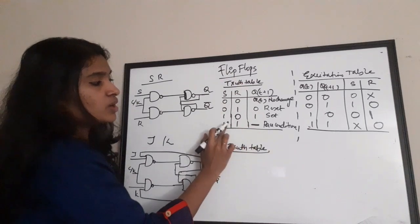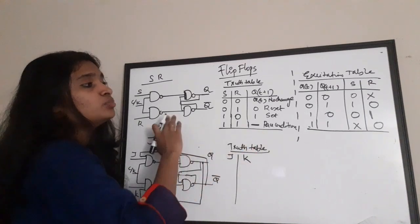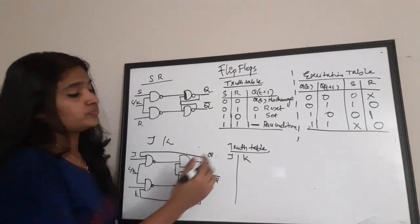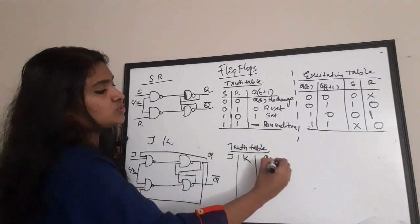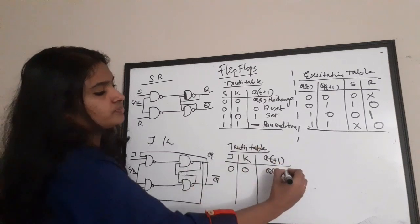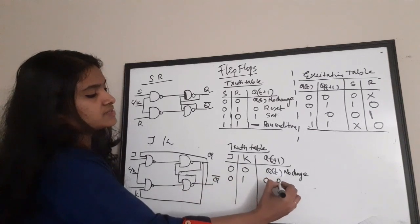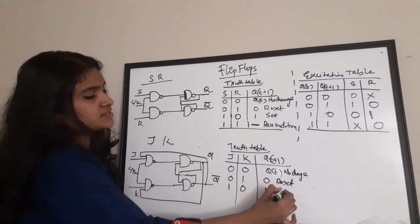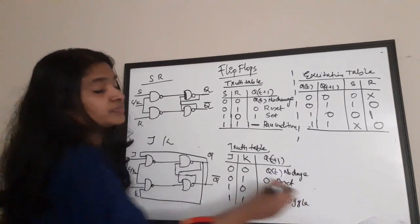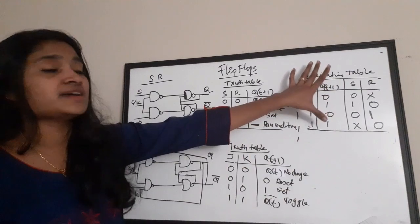The truth table of the JK flip-flop is exactly the same as the SR truth table, with only one change: the 1,1 condition is replaced with a toggle state. For J and K: 0,0 gives QT (no change); 0,1 gives 0 (reset); 1,0 gives 1 (set); and 1,1 gives QT bar — the toggle state.